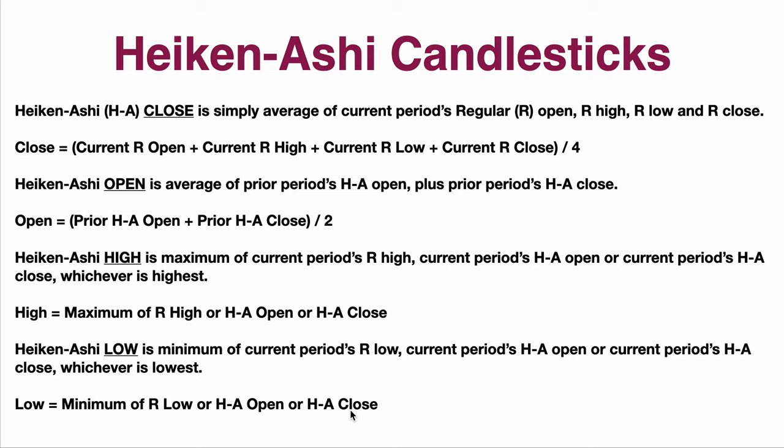The minimum low is the low of everything. The maximum high is the high of everything, whether it's the Heiken Ashi open, Heiken Ashi close, or just the high for the day. So the plan is to average these things so that you're literally seeing an average bar of price movement. It smooths everything out.